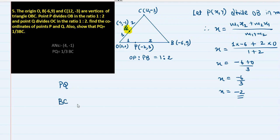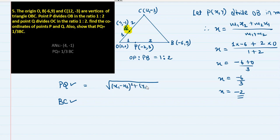The coordinates of point Q are (4, -1). Now use distance formula to find the lengths of PQ and BC. Distance formula: d = √[(x1-x2)² + (y1-y2)²]. Pause the video, find the lengths of PQ and BC, and prove that PQ = (1/3)BC.